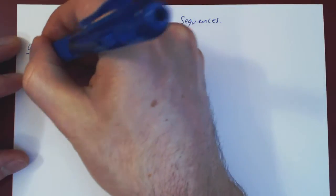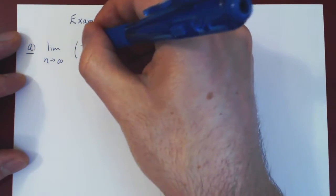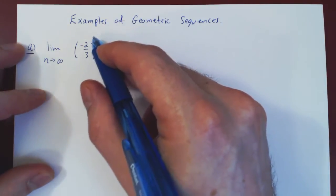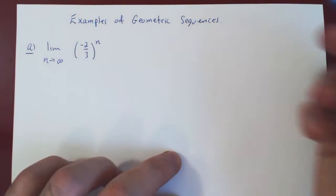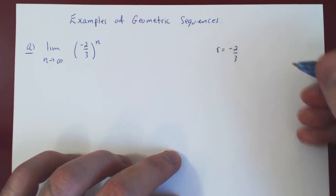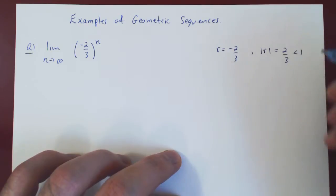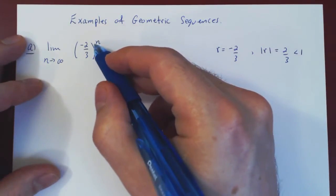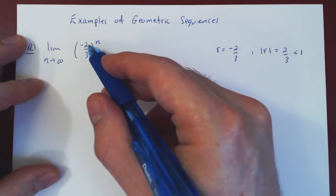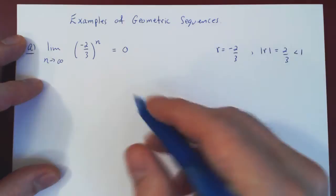We look at the limit as n goes to infinity of negative 2 over 3 to the n. We ask: what is r? We're taking larger and larger powers of negative 2 thirds, so r is negative 2 thirds. The absolute value of r is 2 thirds, which is strictly less than 1. So we're taking larger and larger powers of a number whose size is less than 1, meaning the number becomes smaller and smaller, so the limit converges to 0.